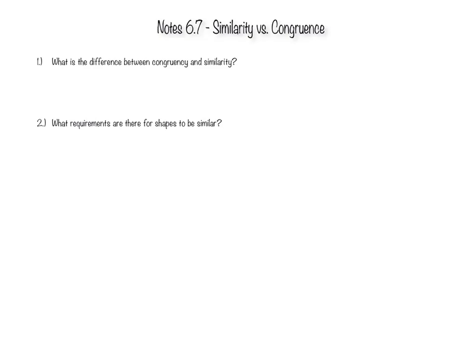So the first thing that we're going to go over is what's the difference between congruency and similarity. So let's talk about congruent first. Congruent is when the sides are congruent and their angles are congruent. So when their sides and angles are the same.